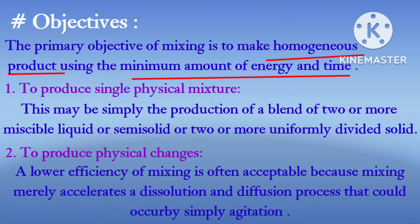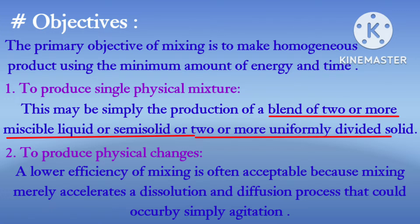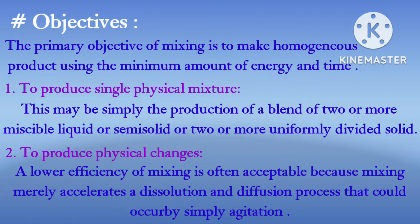Other objectives for mixing: the first is to produce a single physical mixture — this can be the production and blend of two or more miscible liquids, semi-solids, or two or more uniformly divided solids — which can be a mixture or blend of any liquid, solid, or semi-solid to perform one type of mixture.